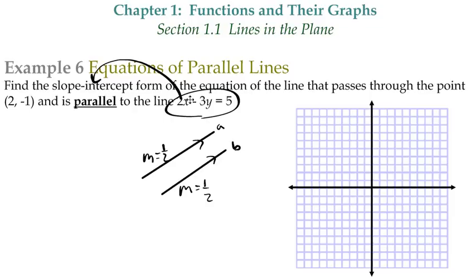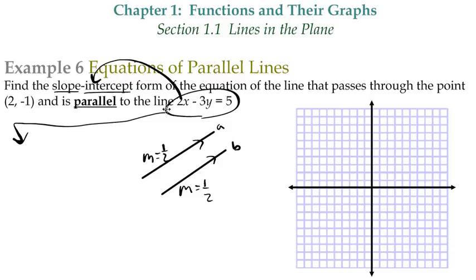So the process here is: let's find the slope of this line, and then we're going to use that slope and this point to find our equation. The way that we find the slope of any line is we put it in slope-intercept form — y = mx + b — because if we look at the coefficient of x, then we know what the slope is.